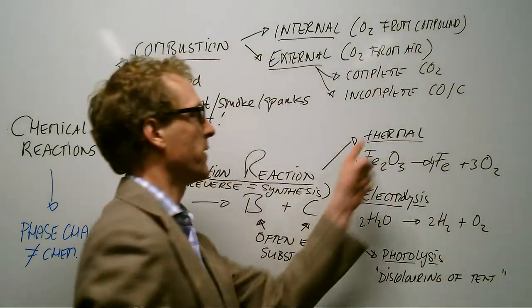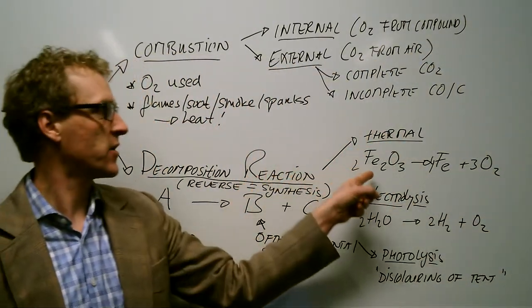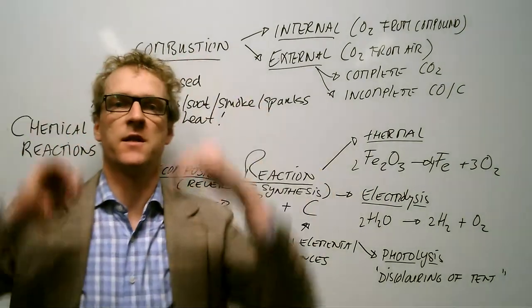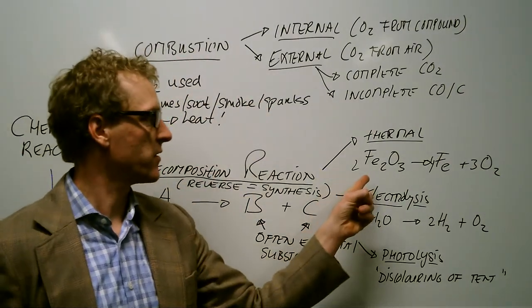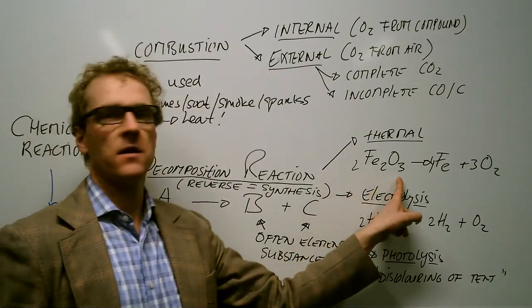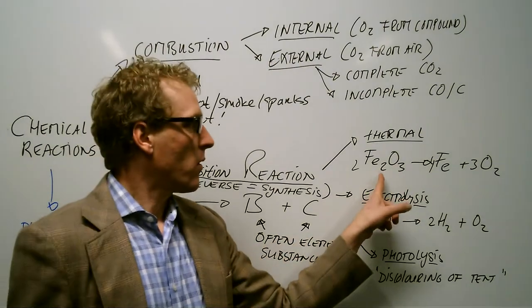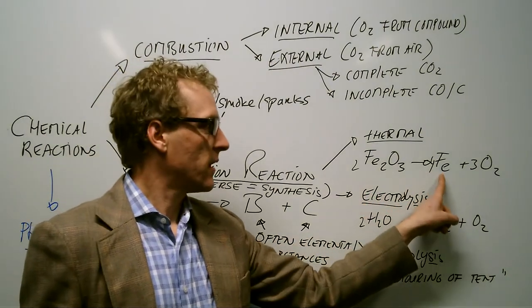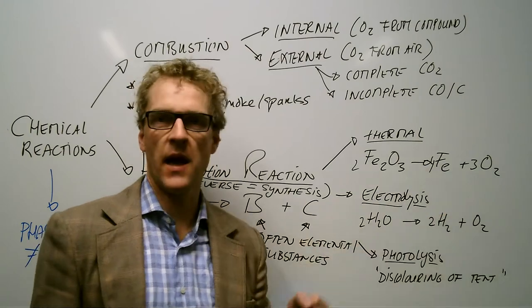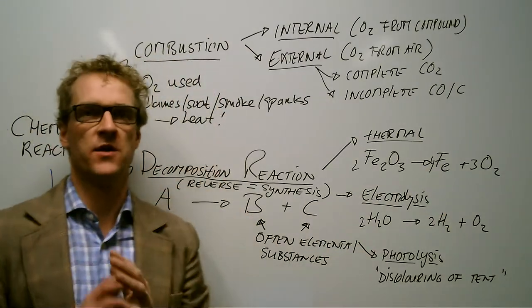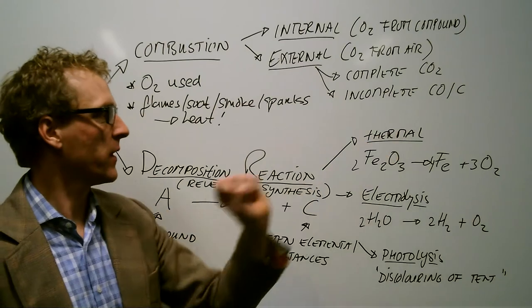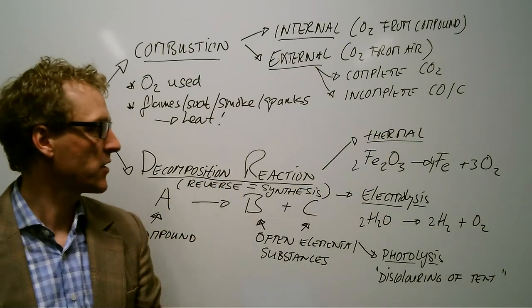For example, if we look at a thermal decomposition reaction—so if we need to raise the temperature, in this case to 3000 degrees—iron oxide turns into iron and oxygen. But we need to raise the temperature, therefore calling it a thermal decomposition reaction.